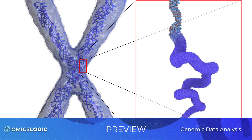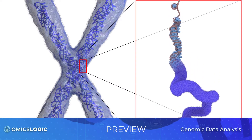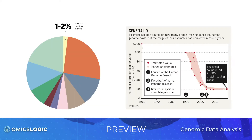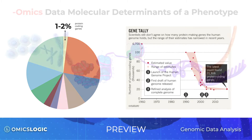DNA contains instructions for various functions a cell must perform to grow and maintain life. Therefore, DNA contains both actively needed recipes and all kinds of other instructions that need to be stored, but not necessarily used all the time. Today, there are several competing human gene databases with many thousands of differences among them.